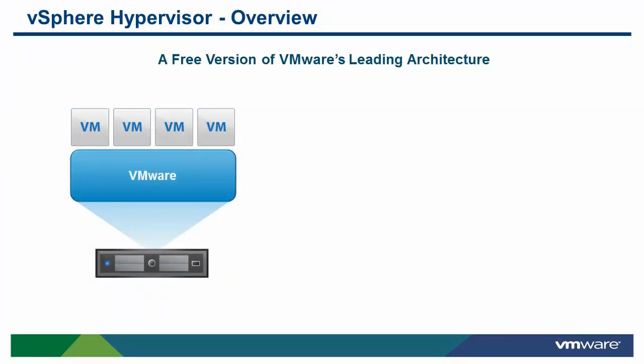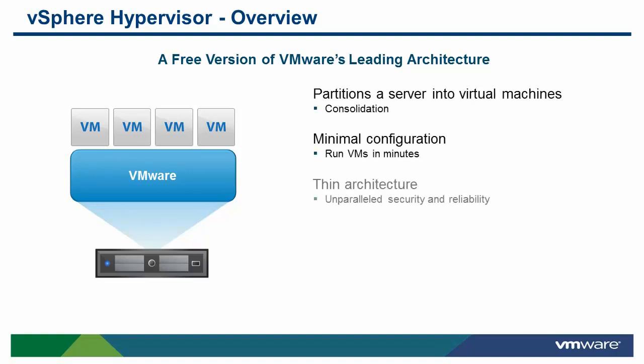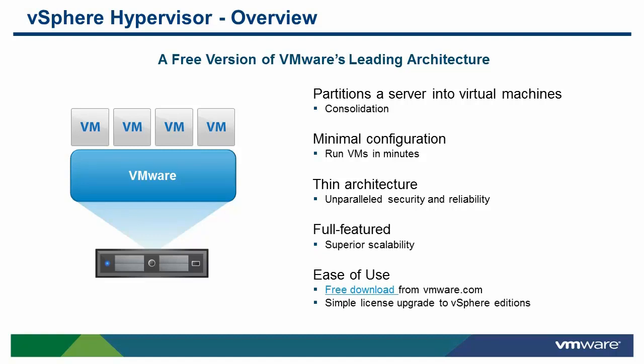vSphere Hypervisor is the free version of VMware's leading-class architecture that helps you save money through consolidation, get up and running in minutes, and utilize an extremely thin architecture requiring only 144 megabytes of space to install. A small disk footprint means reduced attack surface and fewer patches. VMware Hypervisor features superior scalability and manageability, is easy to install and use, and can be upgraded just by changing the license key.